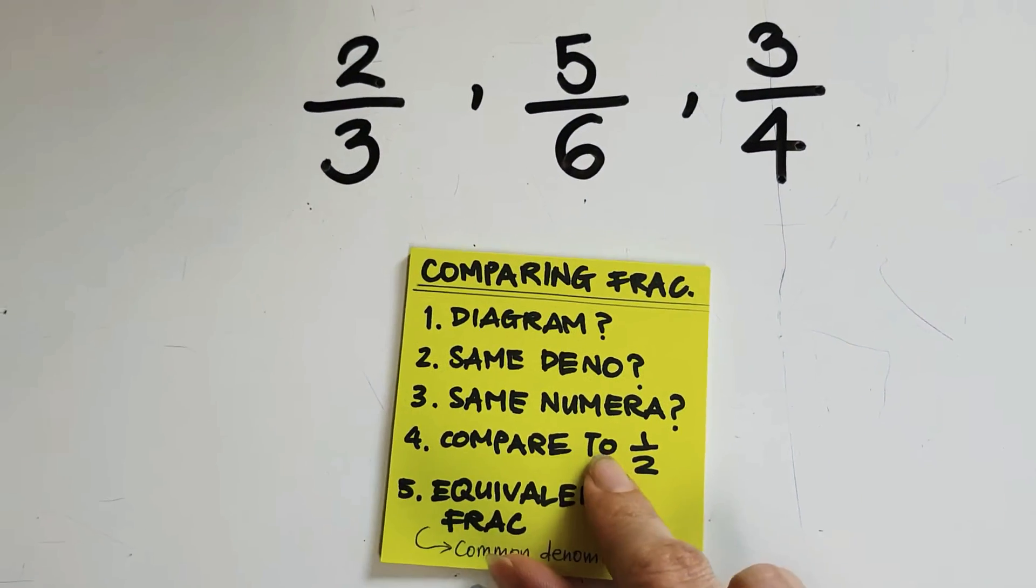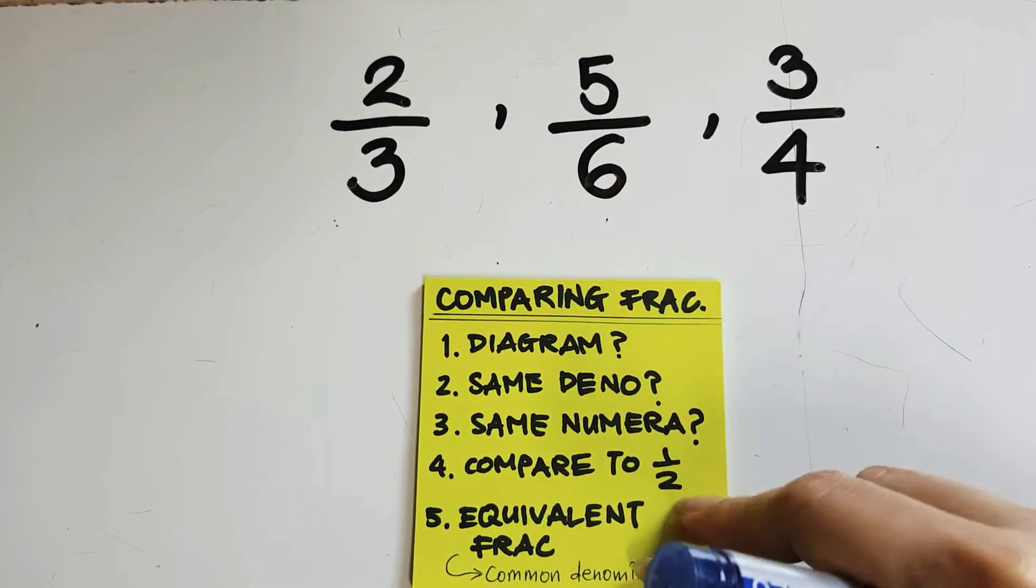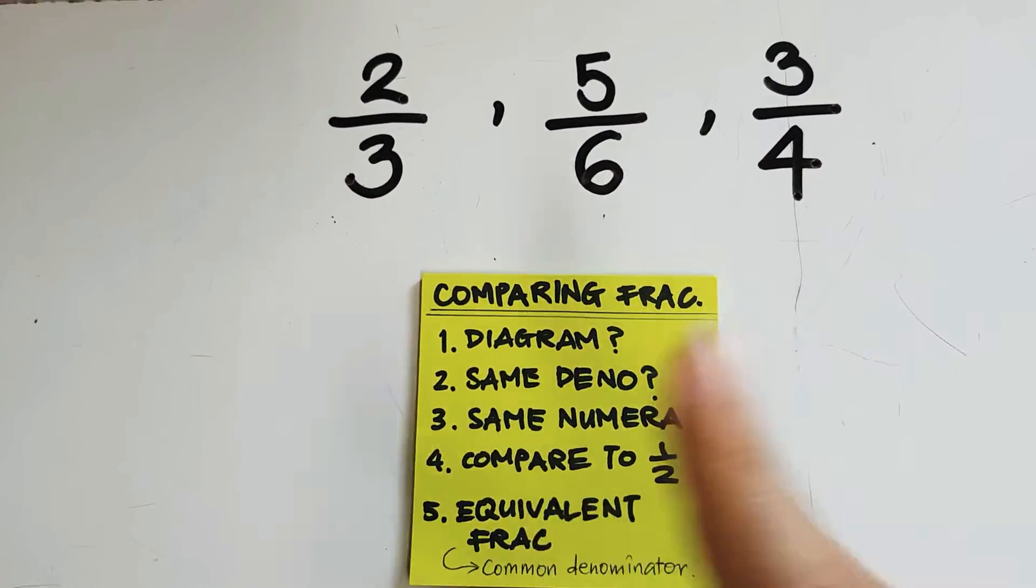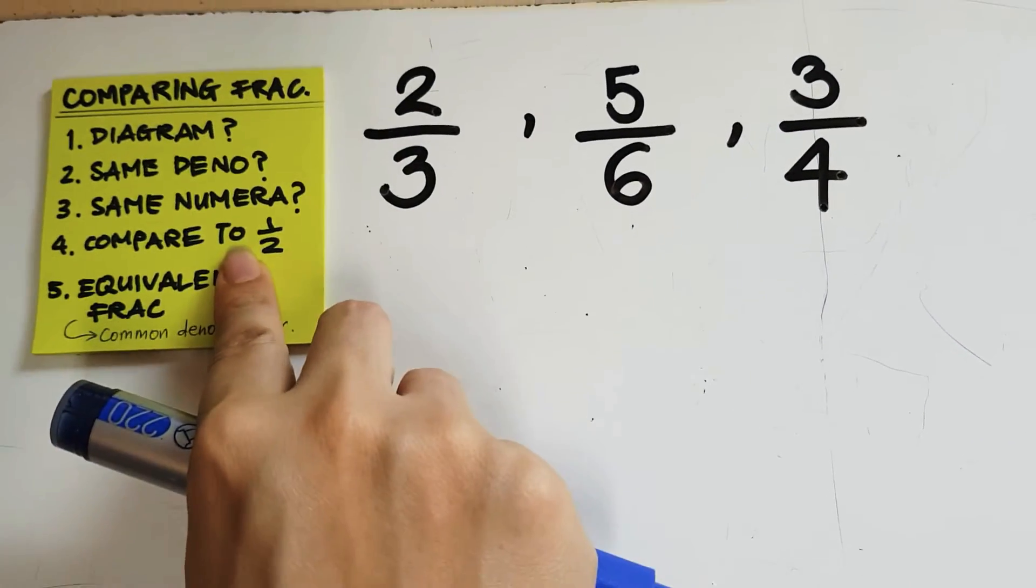So, let's try comparing to half. We run down the list each time we have to compare a fraction to find out which method we are going to use. So, let's try comparing to half first. I'm going to leave this at the side.